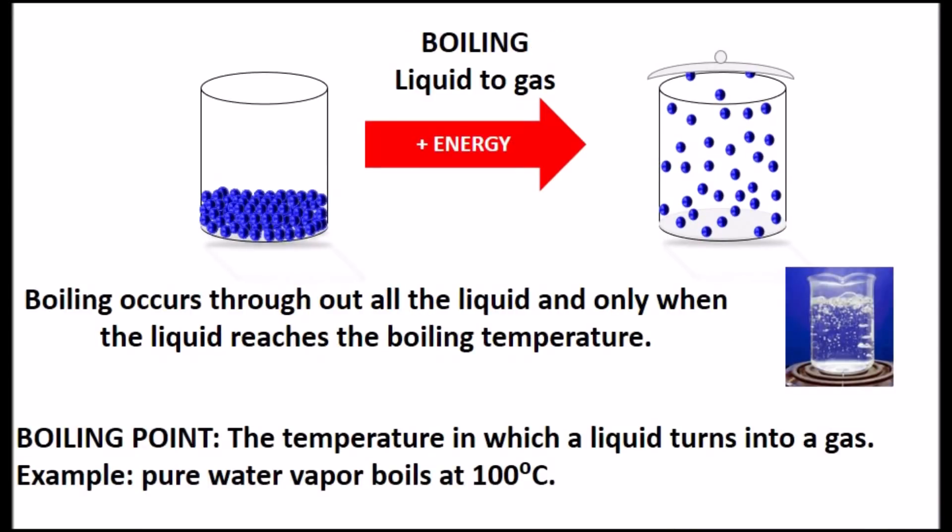The most common name for a change between liquid to gas is boiling. If we heat a liquid enough, all its particles will reach the temperature where they have enough energy to become a gas, all at the same time. This is the boiling point or boiling temperature. Boiling occurs all around the liquid, and that's why we see bubbles all over.